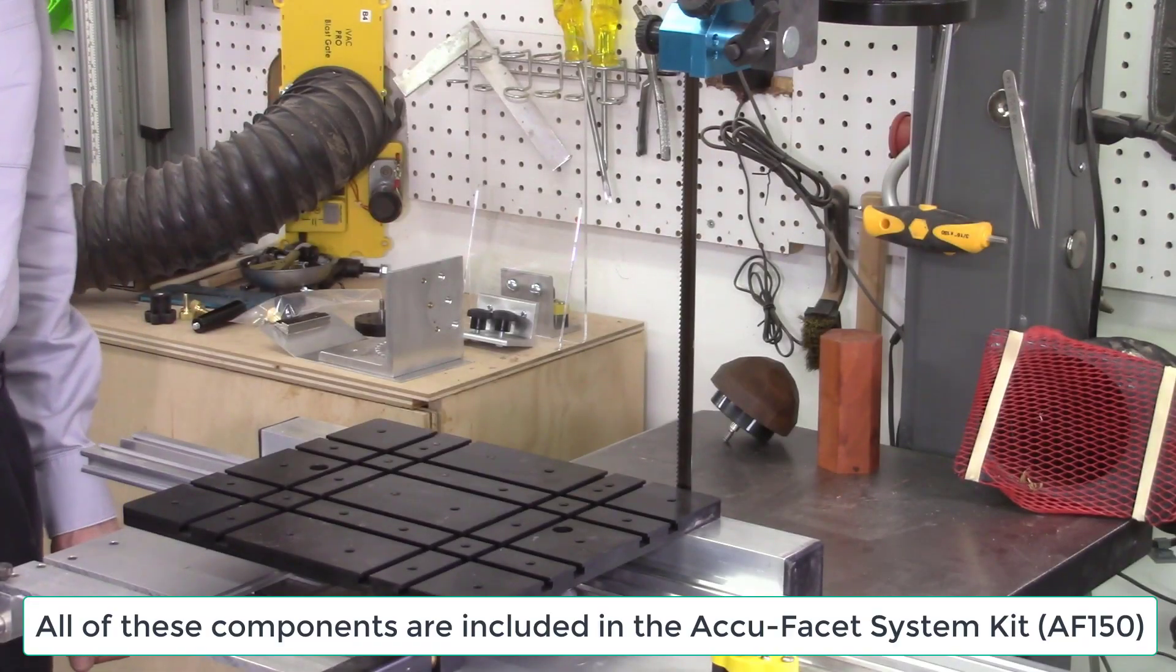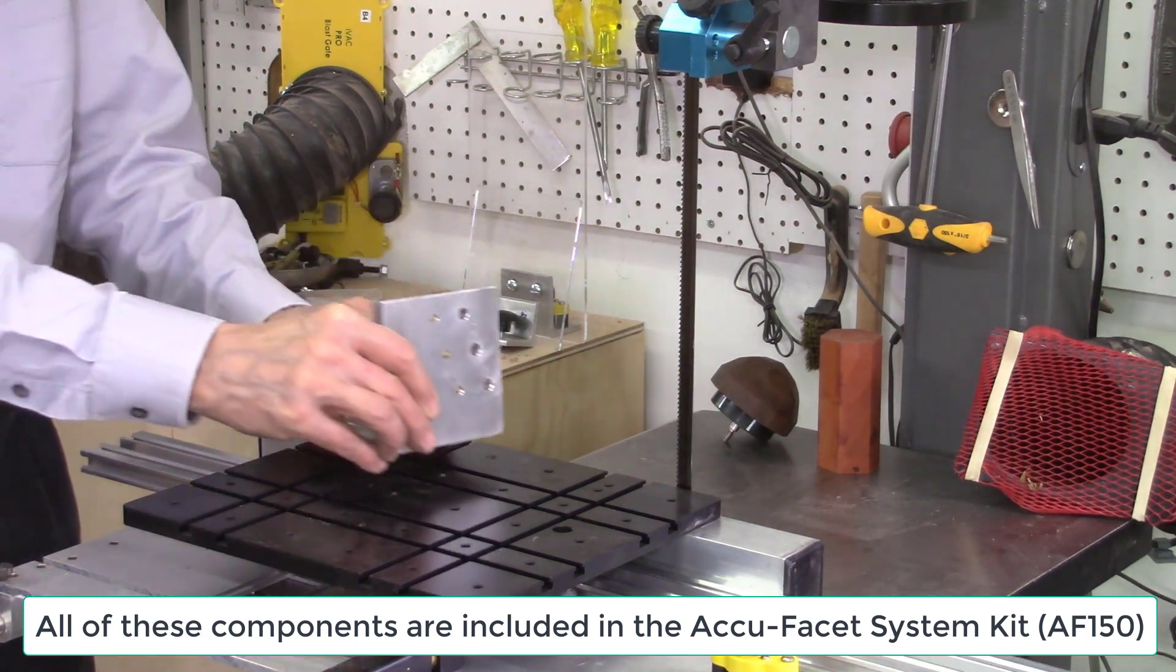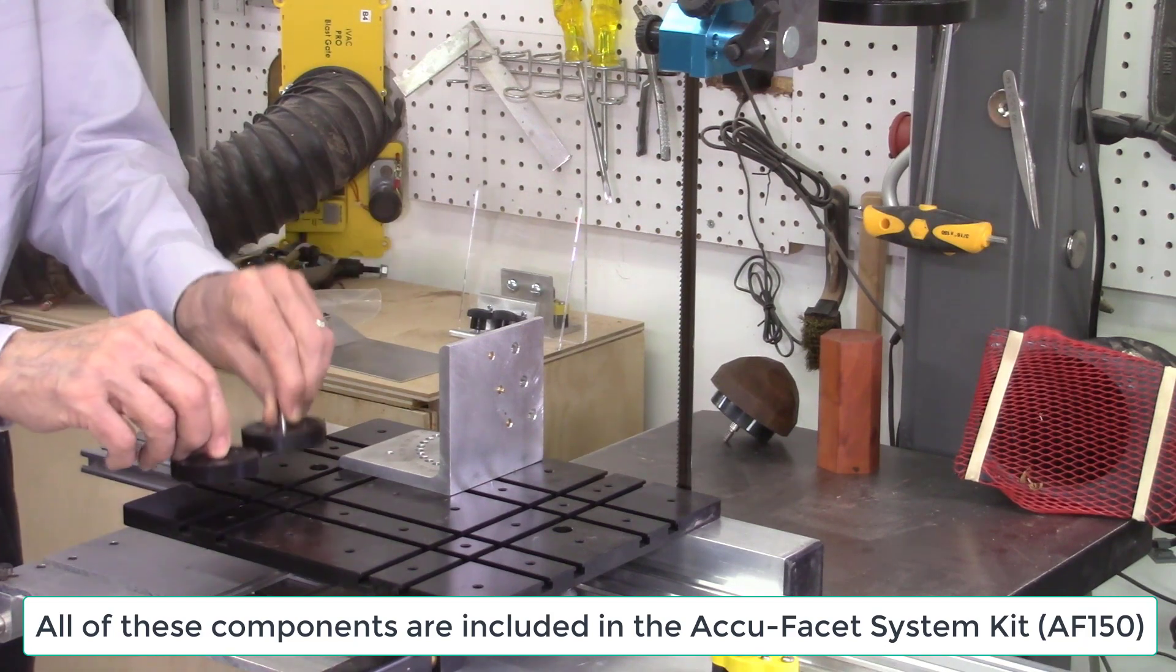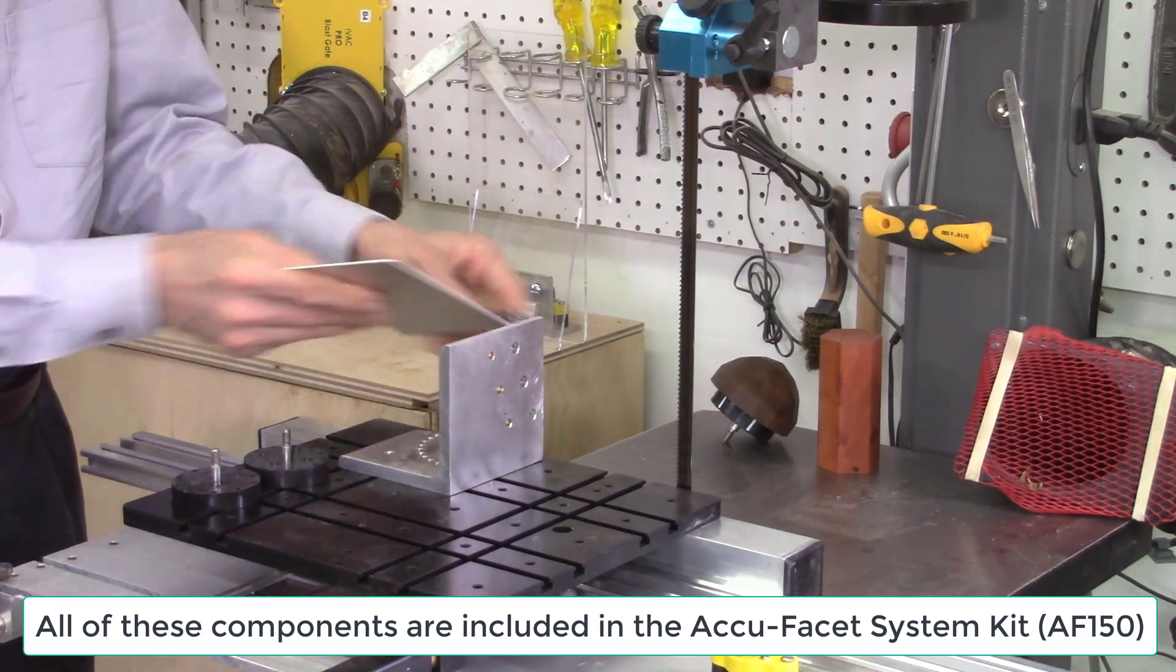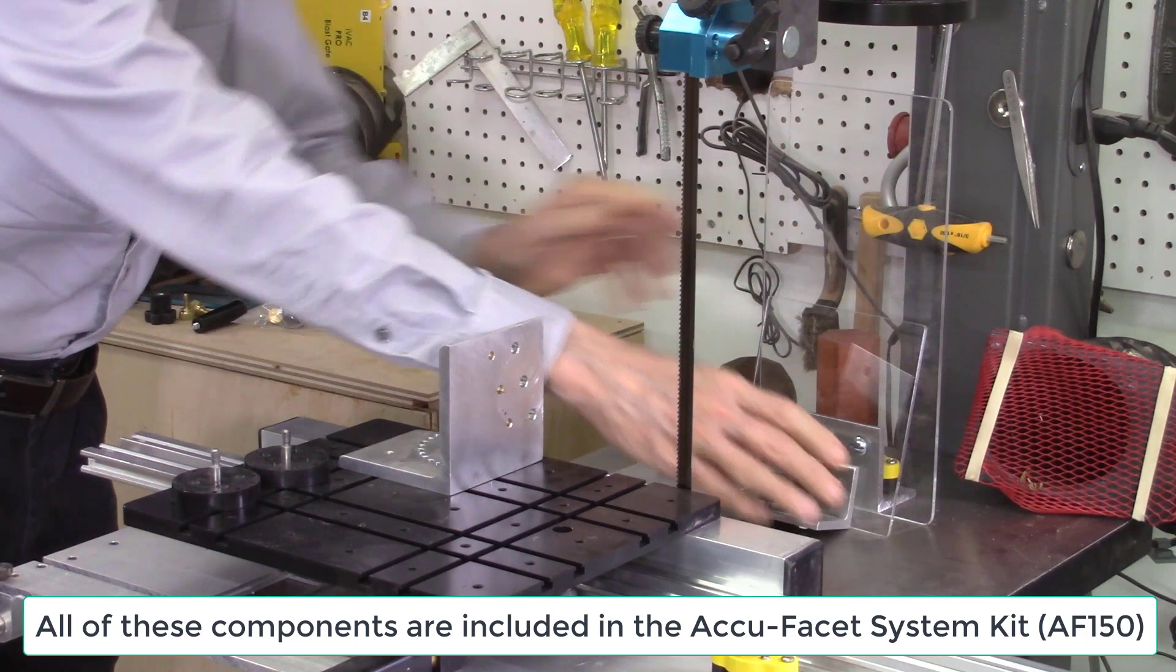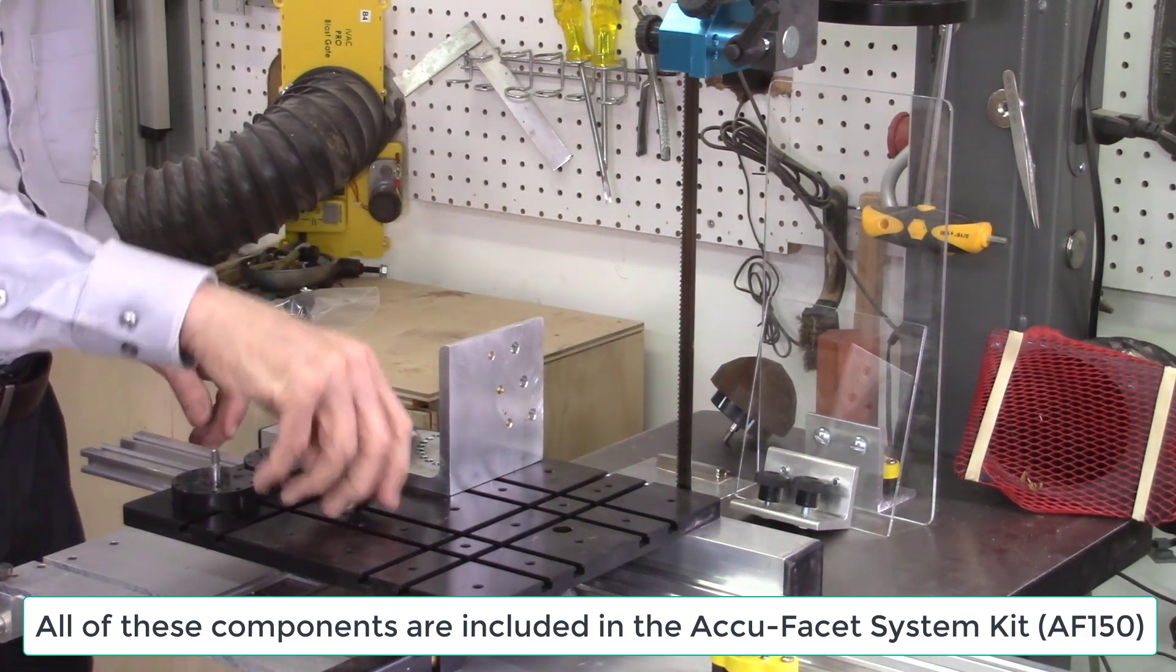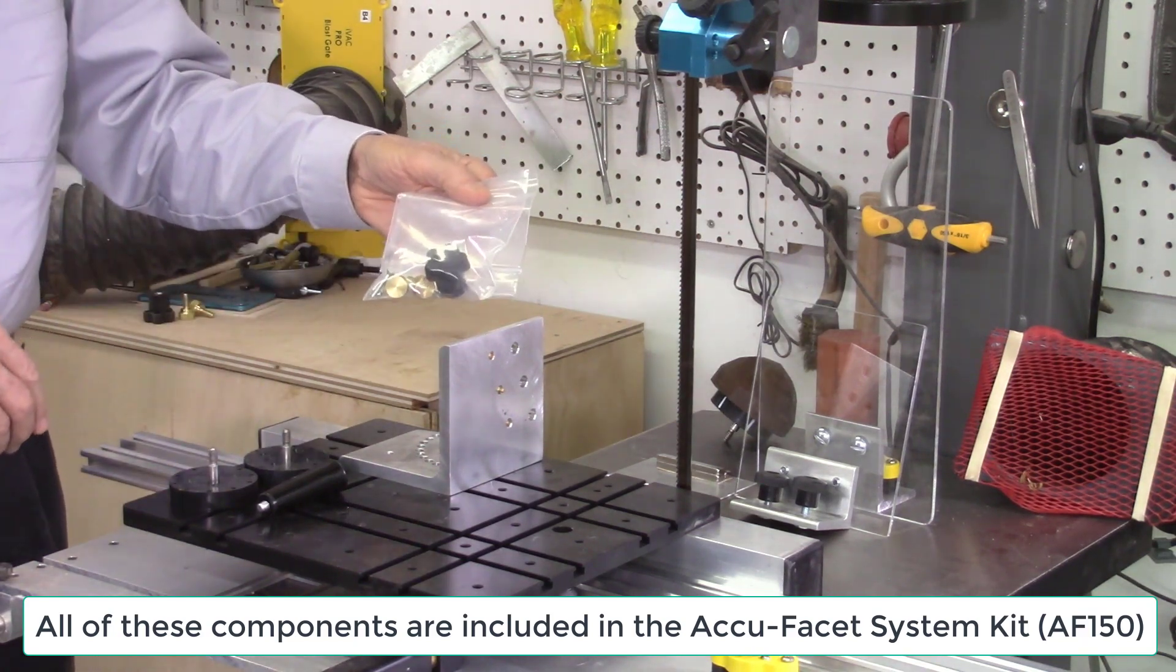The AccuFacet system consists of a number of components: the L-bracket support plate, two pattern discs, a ramp with two magnets, two safety shields, a handle for the AccuFacet sled, and a package of accessory mounting hardware.